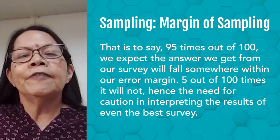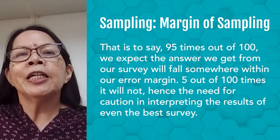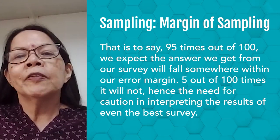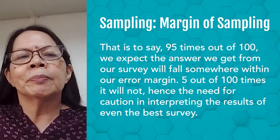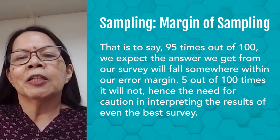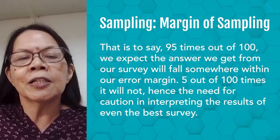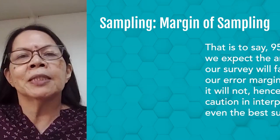For example, if a nationwide survey with a margin of error of plus or minus 3 percentage points finds that 66% of adults have a YouTube account, we would be 95% confident that the true value would lie between 63% and 69% if we had surveyed the whole adult population. That is to say, 95 times out of 100 we expect the answer from our survey will fall somewhere within our error margin; 5 times out of 100 it will not, hence the need for caution in interpreting the results of even the best survey.